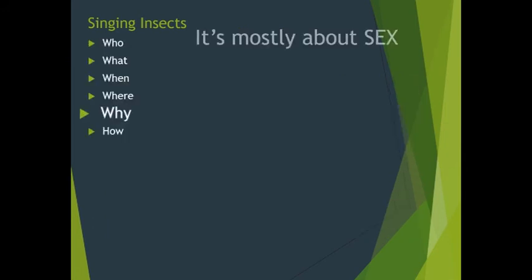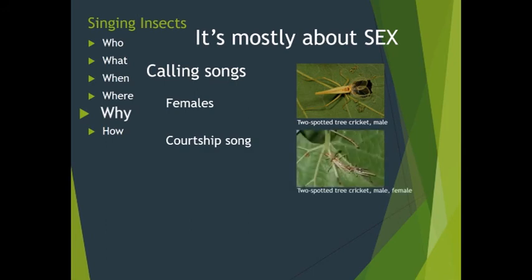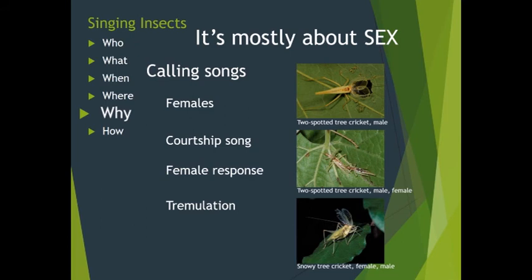Why do a few insects sing? Like so many animal actions, it's mostly about sex. The purpose is to attract other members of the same species, most often females as potential mating partners. When a female approaches, males either fall silent or switch to a courtship song to encourage her receptivity. In some species, females respond with short tics or chirps, but nothing considered a true song. Male crickets and katydids also tremulate — vibrate their bodies — to help the female properly orient her body for sperm transfer.